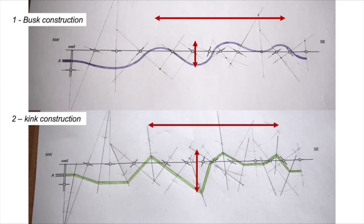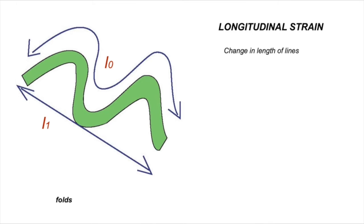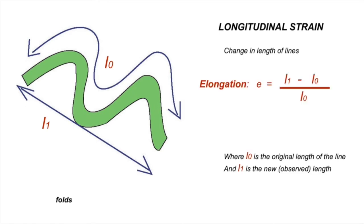Let's quantify the amount of deformation recorded by these cross-sections by measuring longitudinal strain, which charts the change in length of layers involved in deformation. Longitudinal strain is the change in length of lines. To apply this to cross-sections, we measure the present-day cross-section width L1 and compare it with the sinuous unraveled length of the layers L0 — the original length — and plug those into the equation: elongation e = (L1 − L0) / L0.